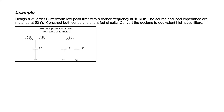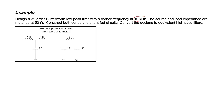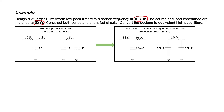Now that we have our prototype circuit values, we use those formulas to convert the prototype values into the actual values, making use of the corner frequency of 10 kilohertz and source and load impedances of both 50 Ohms. The low-pass filter design is now complete. Since both inductors started with a prototype value of 1 Henry, they both wound up with the same value in the final circuit: 0.8 millihenries. The same is true for the two capacitors — they started with prototype values of 1 Farad and ended up with identical final values.